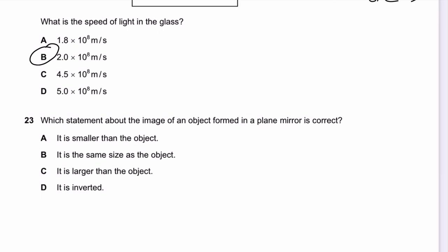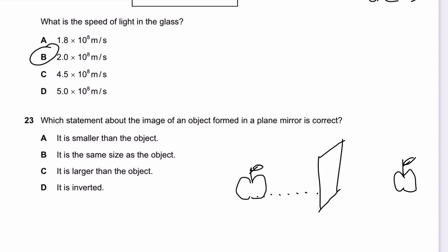Question 23: Which statement about an image formed in a plane mirror is correct? The image appears behind the mirror as if it exists there — it is a virtual image. It is the same size as the object and the same distance behind the mirror as the object is in front. So: it is not smaller, not further — it is the same size and the same distance.